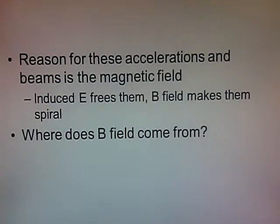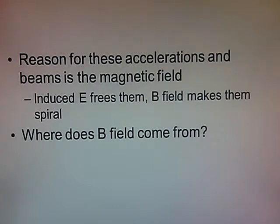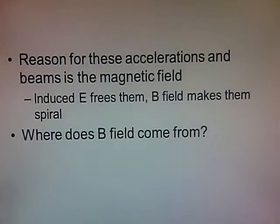The reason for having these accelerated and highly relativistic electrons in the first place - in order to provide beaming and all that - is the magnetic field. It's a two-part story. The magnetic field is responsible for trapping these charged particles onto these spiral paths, but it's also responsible for freeing them in the first place. Because if we have this rotating magnetic field, it induces a potential difference across the surface of the neutron star, which imparts quite a lot of energy, freeing up these charged particles off the surface and getting them moving.